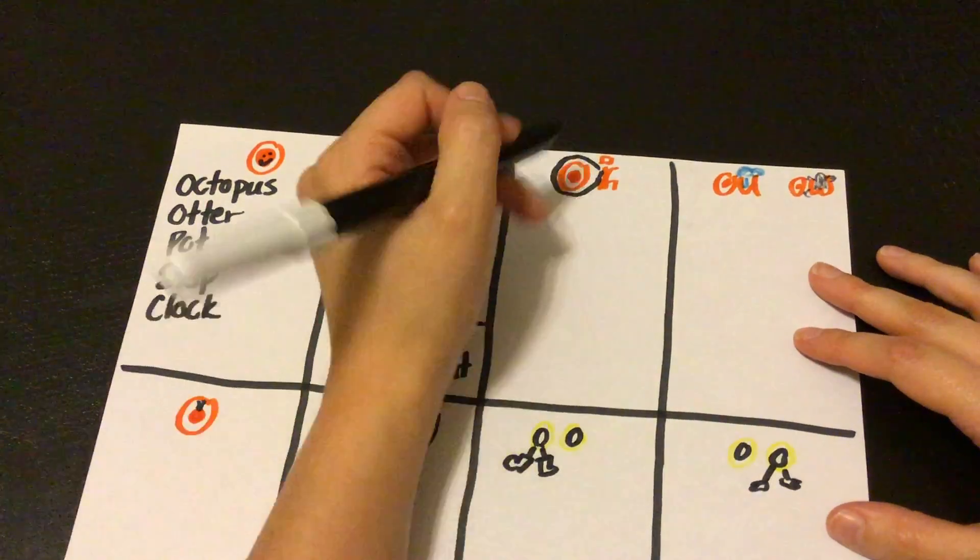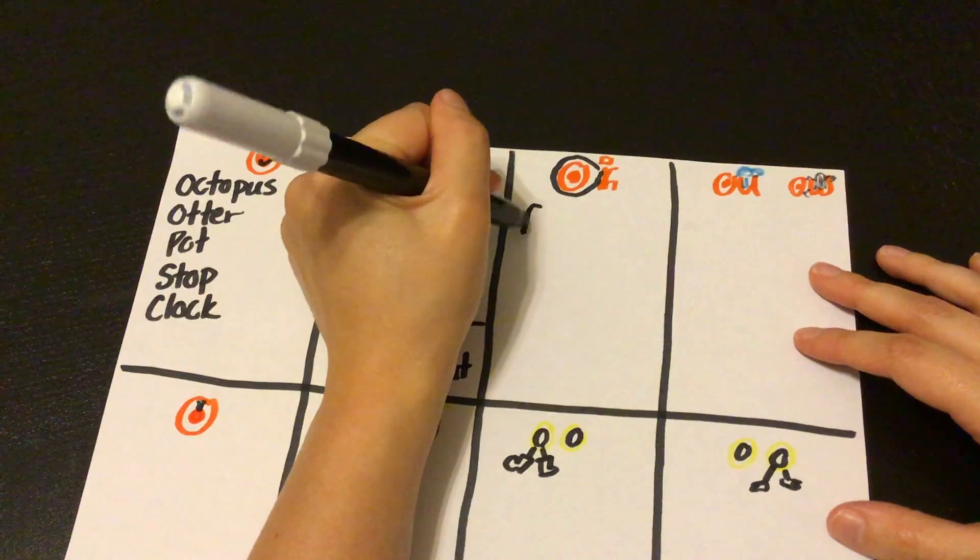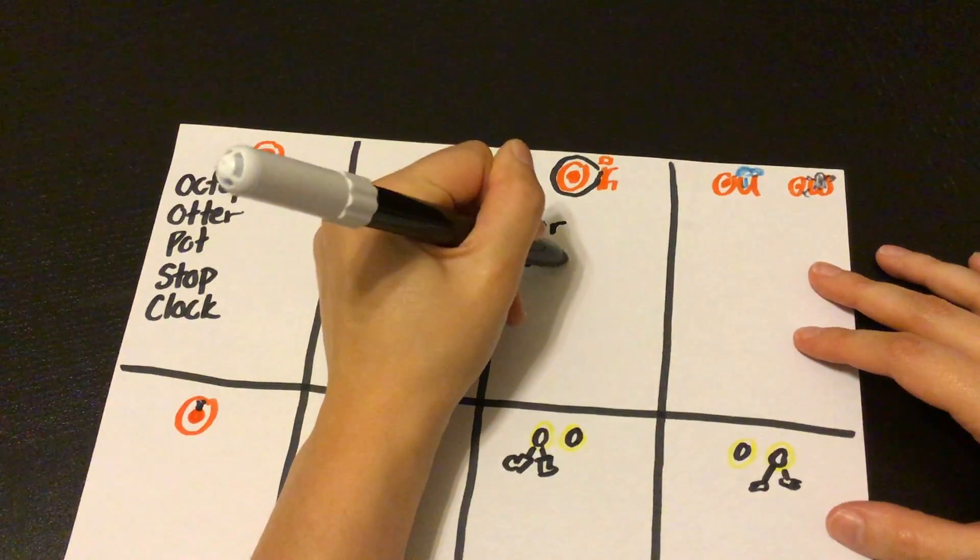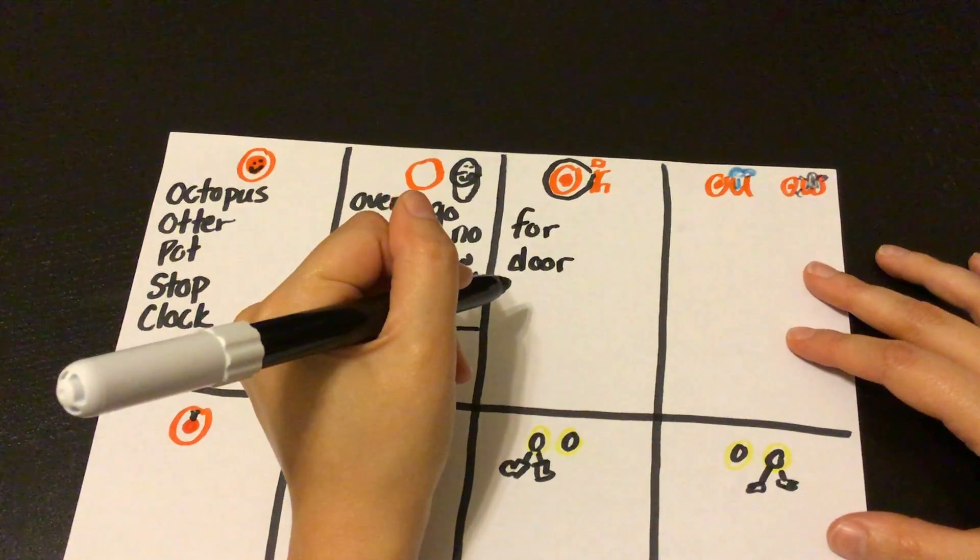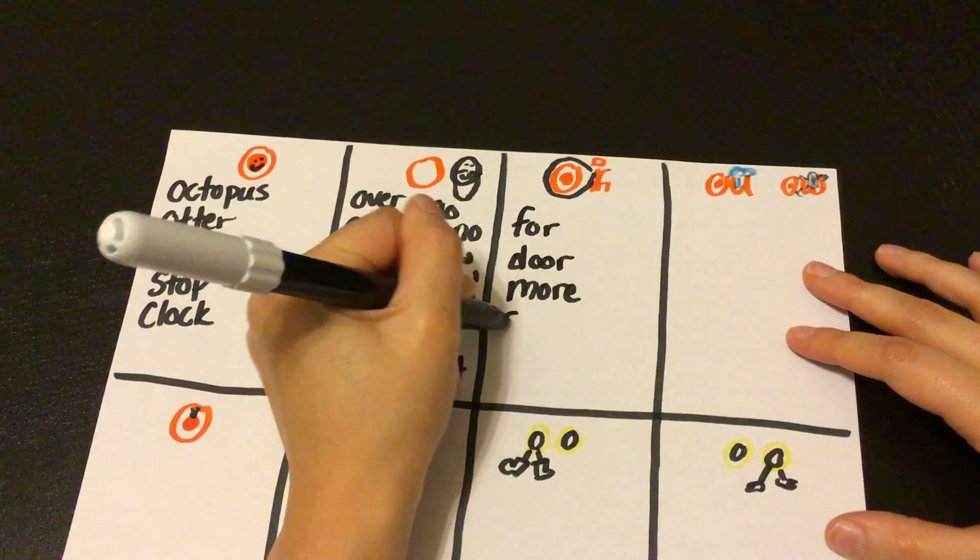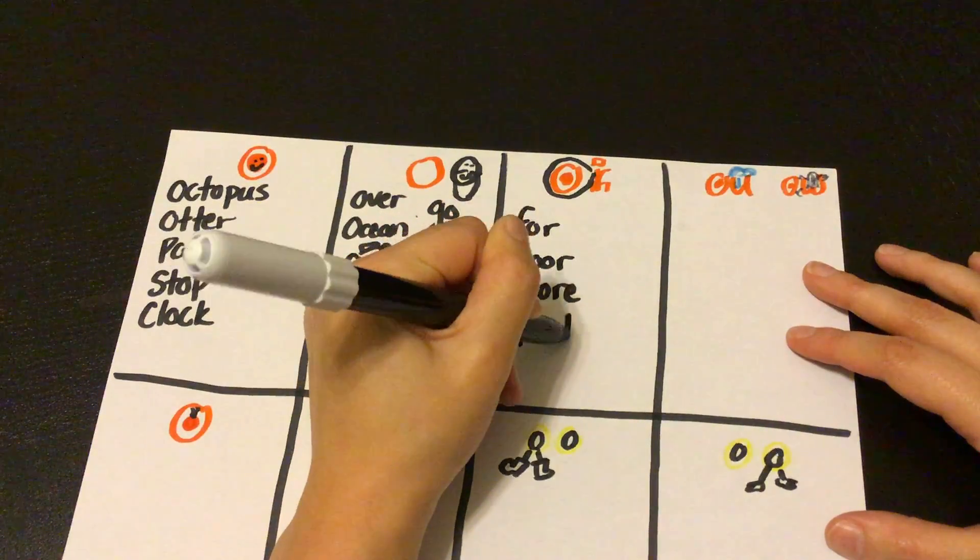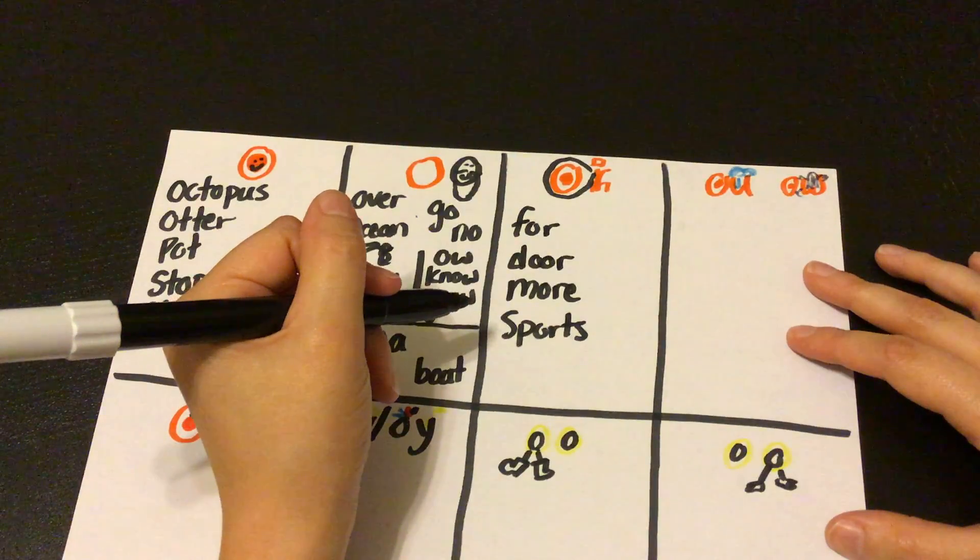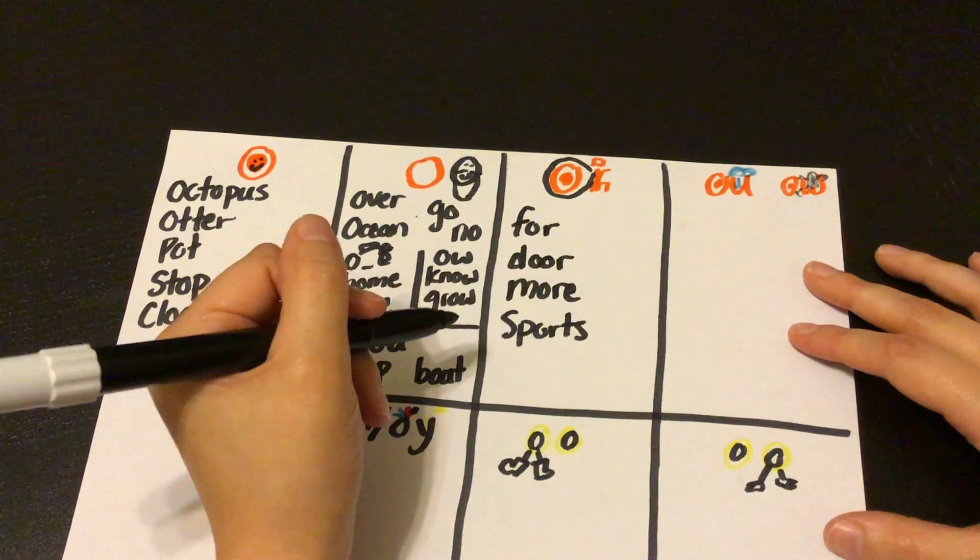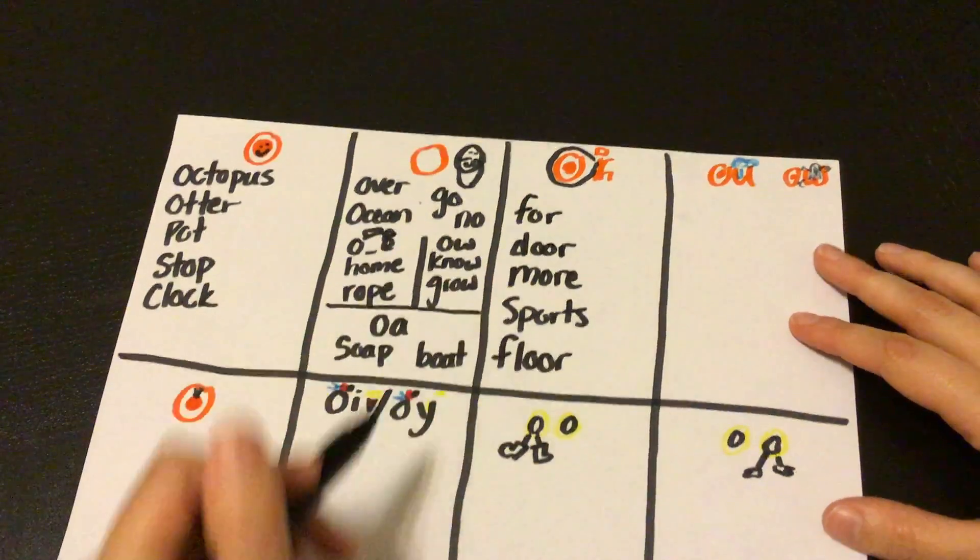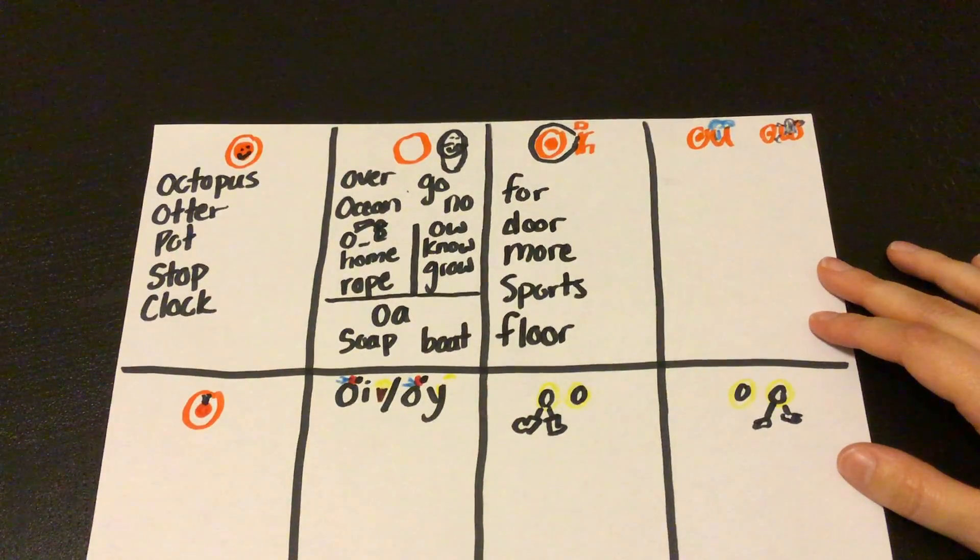Or, or, or, right, we have words like for, or, or door, more, sports, right, floor. O-R words.